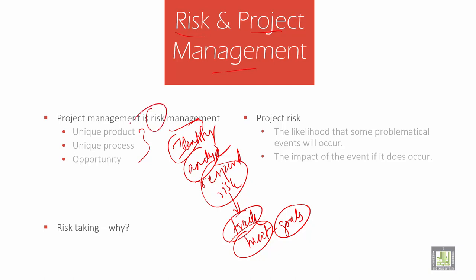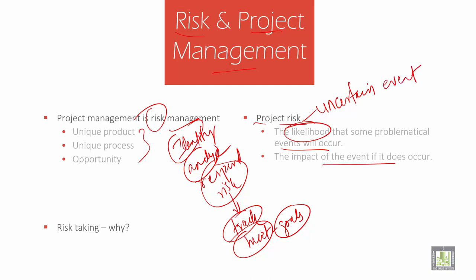Then we talk about project risk. Project risk is actually a likelihood that some problematical events will occur — the likelihood that some problematic events might occur and the impact of the event if it does occur. It is an uncertain event or any condition that occurs.